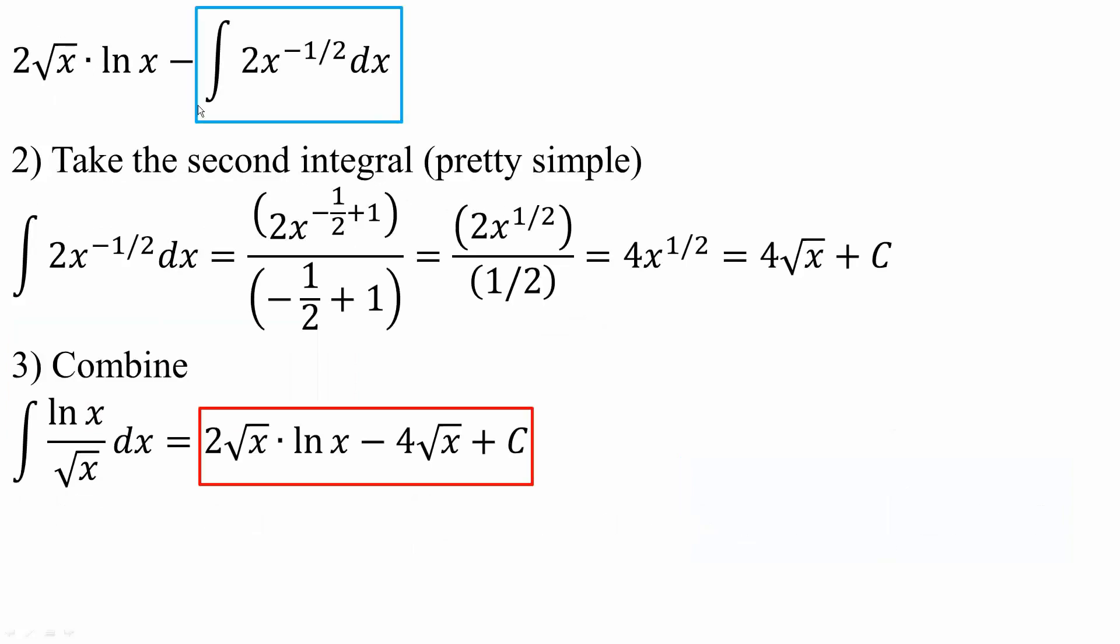So now I need to take the integral of this piece. And that's also pretty simple. So I would get 2x raised to negative 1 half plus 1 divided by negative 1 half plus 1. So I get 2x raised to 1 half divided by 1 half.